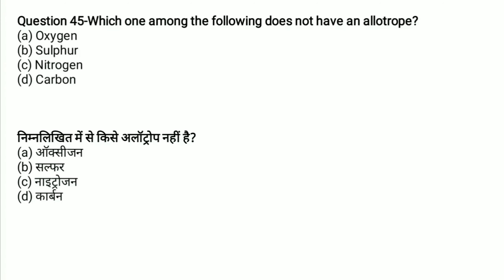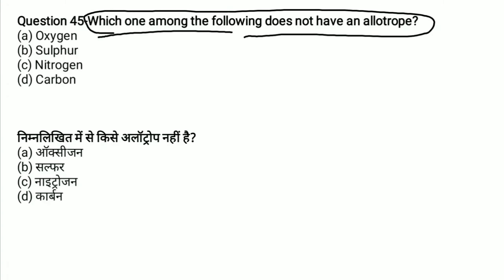Which one of the following does not have allotropes? Allotropes means the different forms an element can take. Nitrogen cannot exist in different allotropic forms. The answer is C — Nitrogen.